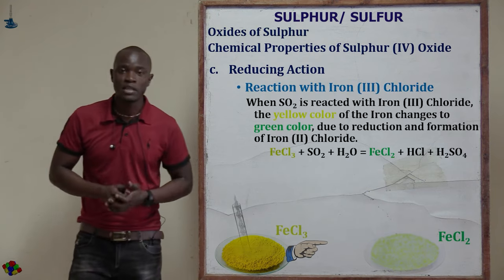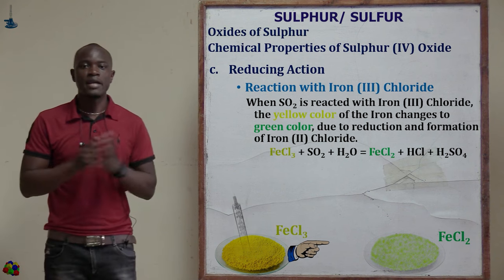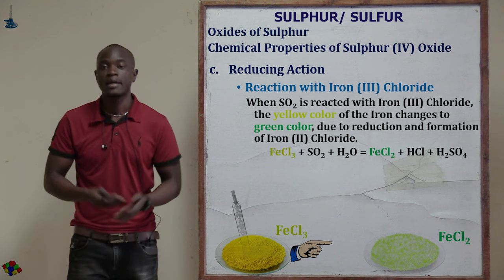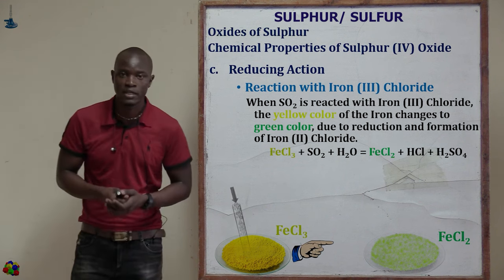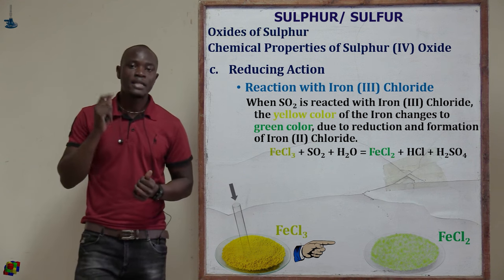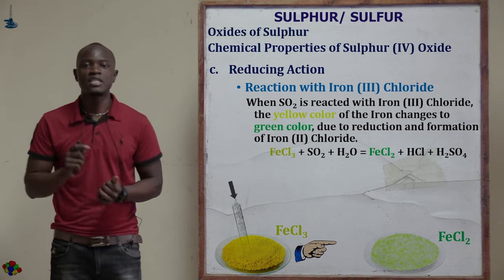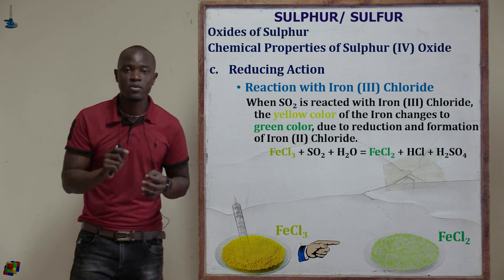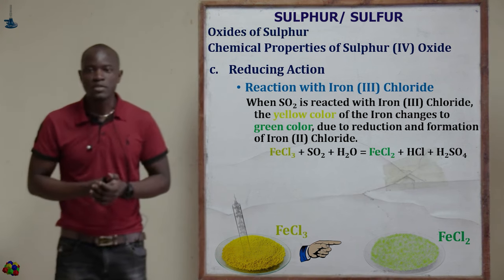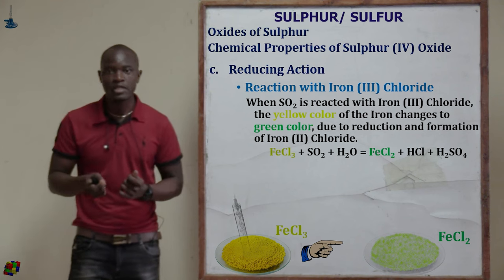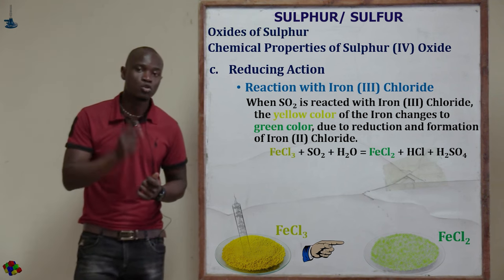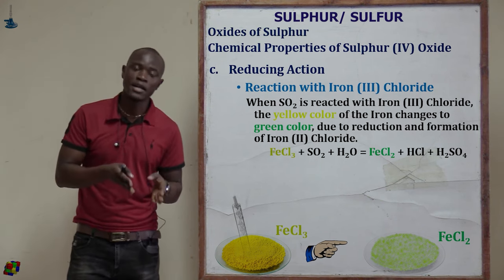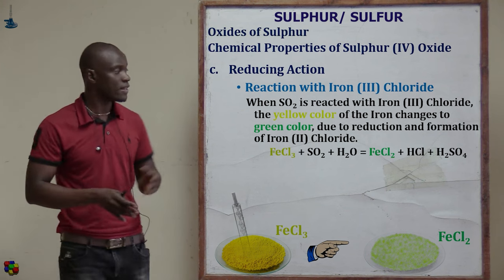The next reducing property is reaction with iron(III) chloride. The yellow iron(III) chloride will change color to green when sulfur(IV) oxide is bubbled inside it. This is because sulfur(IV) oxide reduces yellow iron(III) chloride to pale green iron(II) ions. The iron(III) chloride plus SO2 plus H2O reaction produces green iron(II) chloride plus hydrochloric acid plus sulfuric acid.